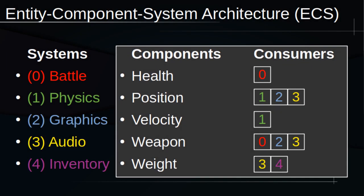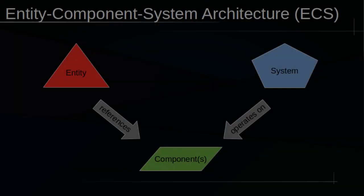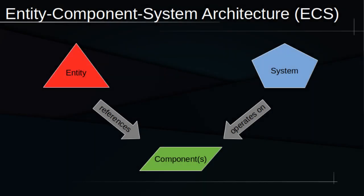Zooming out a bit, the things that iterate over the components belonging to the entities are called systems. Systems are programmed to iterate over specific components or groups of components. So you might have a battle system that iterates over weapons and health, a physics system that iterates over position and velocity, and so on. An ECS is comprised of entities, which are just IDs; components, which those IDs reference; and systems, which iterate over those components. And that's the entity component system architecture in a nutshell.